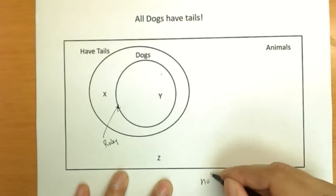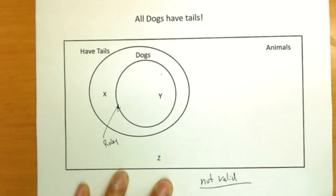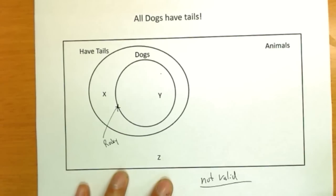This tells me the argument is not valid. The conclusion doesn't follow with certainty from the premises. Not good enough for it to be possible. It has to be certain. We have to know he's a dog from this information.